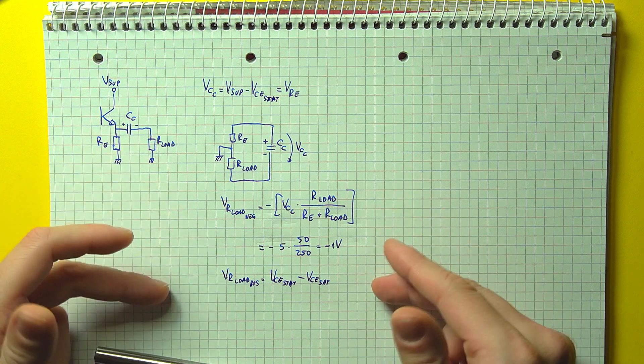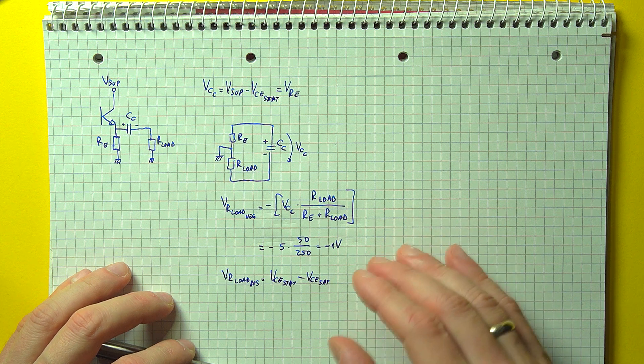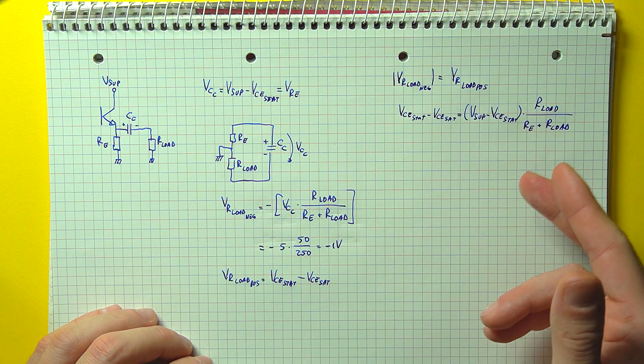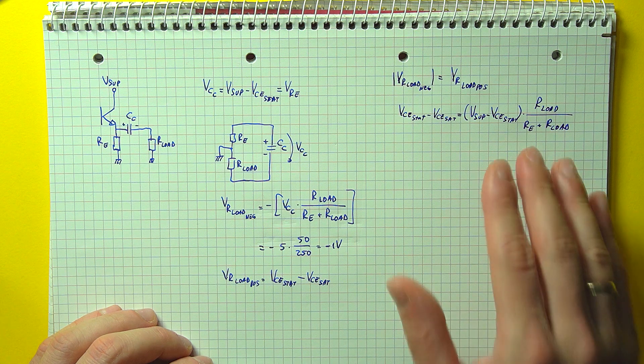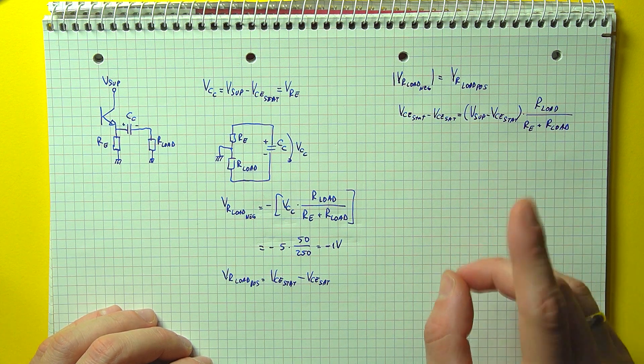So if we take both of these extremes into consideration and try to find out when they are equal, we can write this equation, and from this we can determine the optimum bias point to get the maximum output voltage swing.